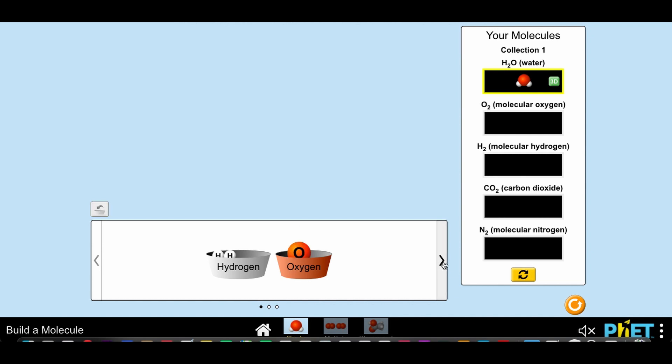Our next molecule requires two oxygen atoms, so we'll find a set of atoms that gives us what we need. Notice that you can break apart your molecule and rebuild it.